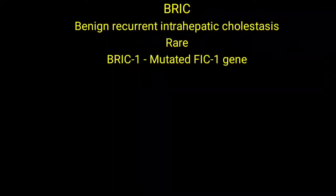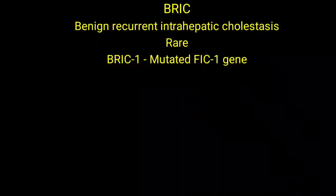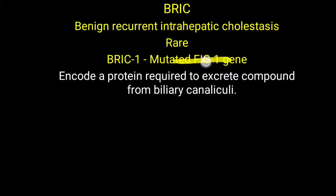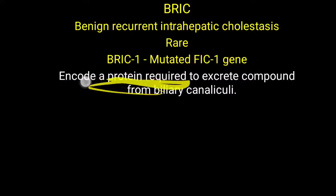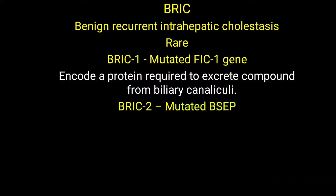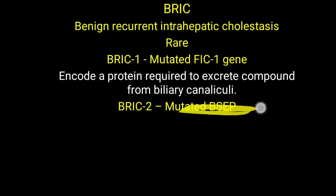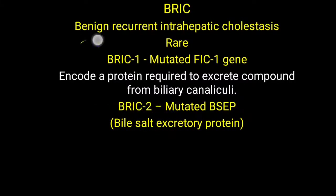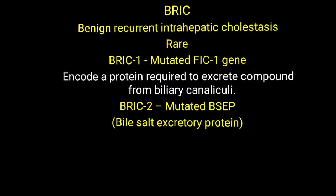BRIC is divided into two varieties based on the defective gene. BRIC1 involves a mutated FIC1 gene (familial intrahepatic cholestasis 1 gene), which encodes a protein required to excrete compounds from the biliary canaliculi. BRIC2 involves a mutated bile salt excretory protein, leading to benign recurrent intrahepatic cholestasis.